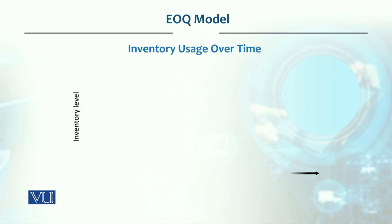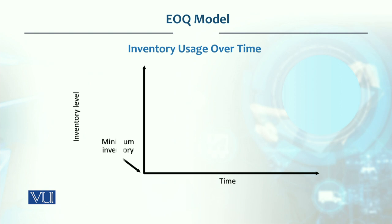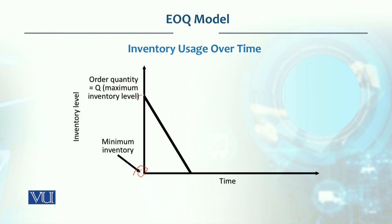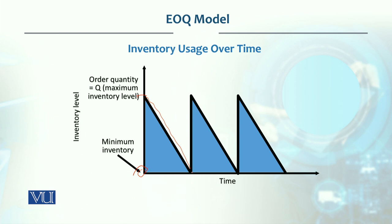If we look at inventory use over time, your minimum inventory is zero and you build up to the maximum inventory. This line is basically the consumption line — the demand rate which is the usage rate. Inventory is consumed over a period, and just as it reaches zero, you receive another order. It then builds up again and is consumed over the period. This reflects the assumption that demand is known and constant.